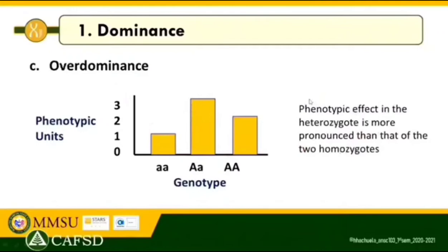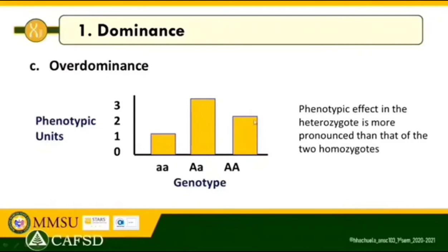For over-dominance, as you can see in the graph, the phenotypic effect in the heterozygote is superior to either homozygote.